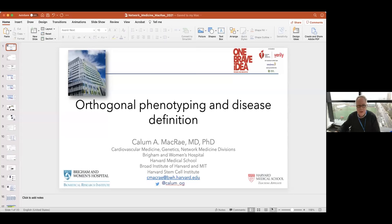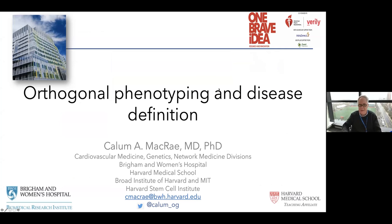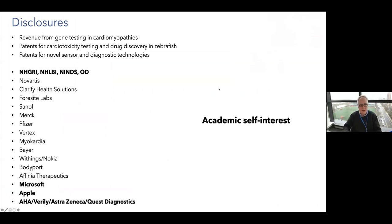Thanks very much for the introduction and thanks to you and to the organizers for the invitation to speak. I'm going to talk about orthogonal phenotypes and disease definition, a rate-limiting step in much of what we do in network medicine, indeed all of biomedical science. These are my disclosures. Probably the most important, since it's the one that you can't measure, is academic self-interest.